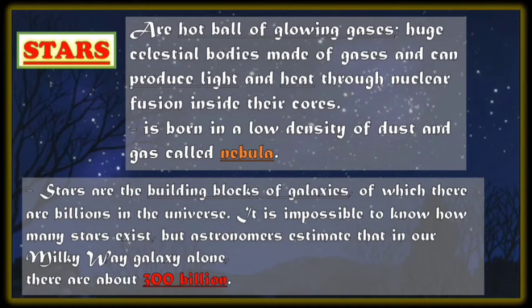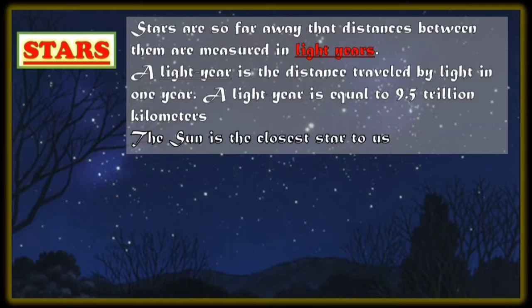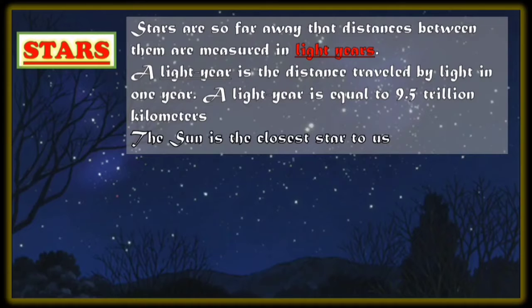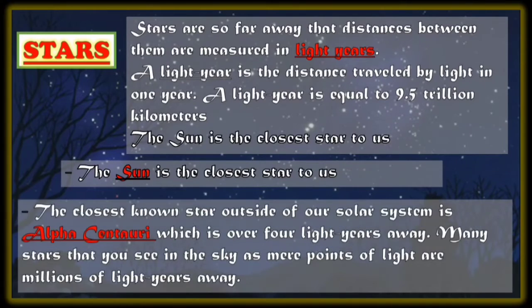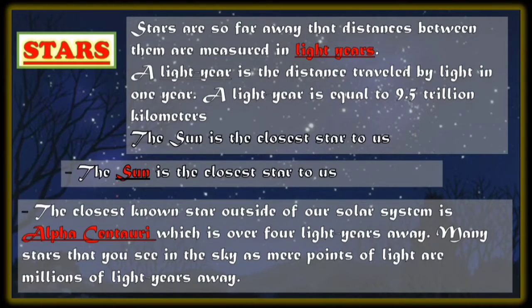It is important to know how many stars exist. Astronomers estimate that in our Milky Way galaxy alone, there are about 300 billion stars. Stars are so far away that distances between them are measured in light years. A light year is the distance traveled by light in one year, equal to 9.5 trillion kilometers. The sun is the closest star to us, and the closest known star outside of our solar system is Alpha Centauri, which is over 4 light years away. Many stars that you see in the sky as mere points of light are millions of light years away.